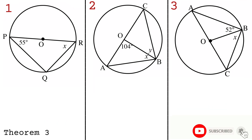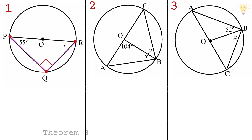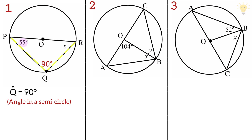Theorem 3 states that the angle subtended at the circle by a diameter is a right angle — the angle in a semicircle equals 90 degrees. The two chords drawn from the two ends of a diameter meet at one point on the circumference at a 90 degree angle. In example 1, we find x given angle P is 55 degrees. Since the angle in a semicircle is 90 degrees and the angles in a triangle sum to 180, we subtract 55 and 90, giving x equal to 65 degrees.